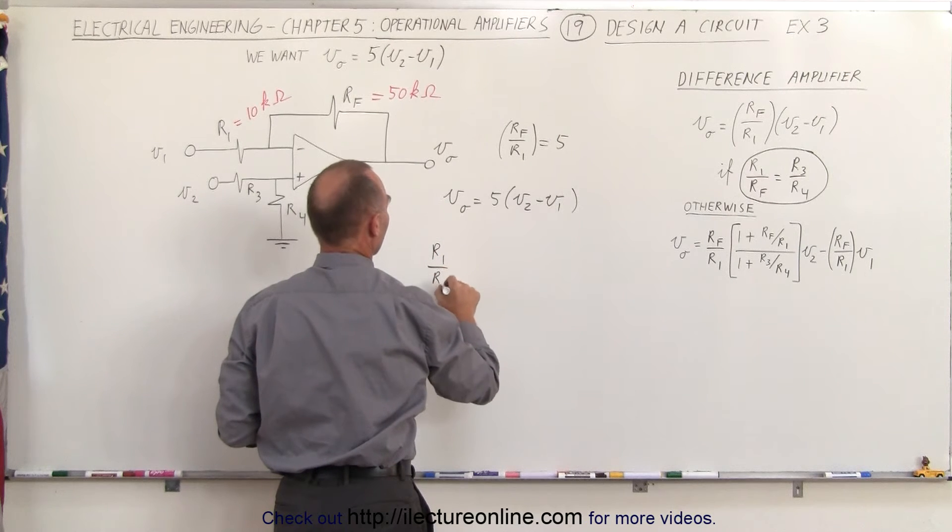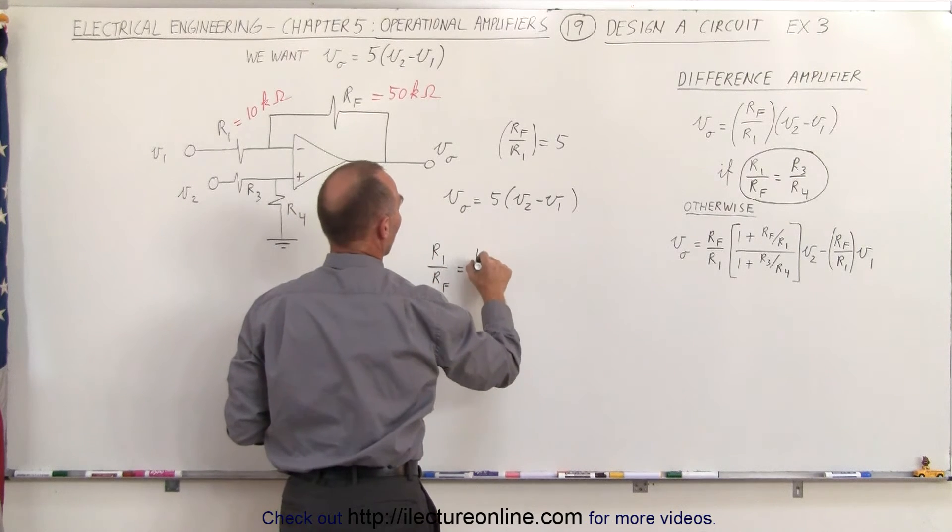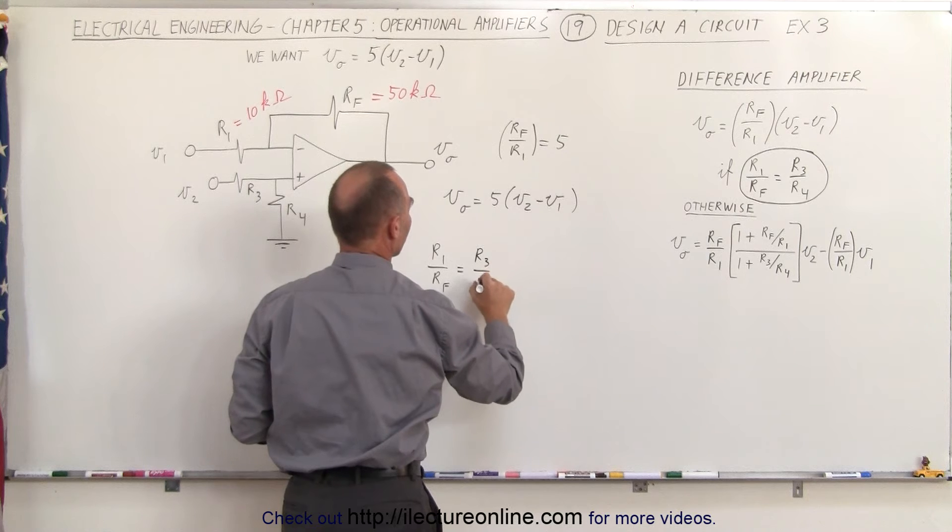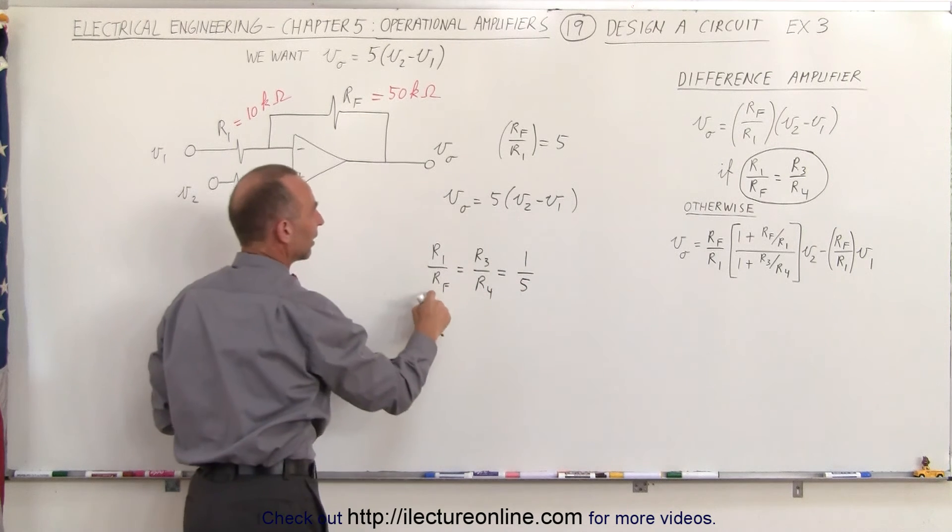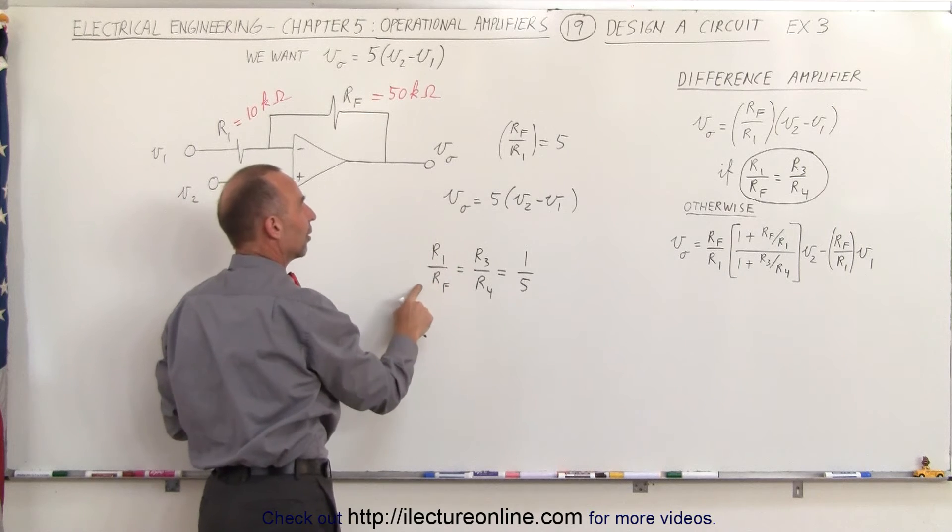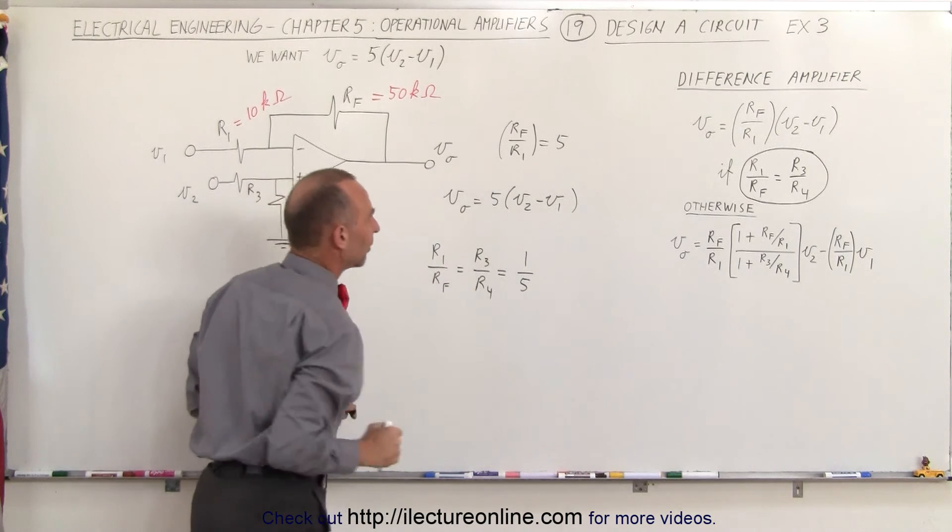In other words, R1 divided by Rf must equal R3 divided by R4, and this must equal 1 divided by 5. Notice that it's the inverse of Rf over R1, so therefore this is 1 divided by 5.